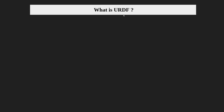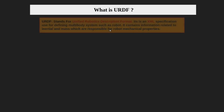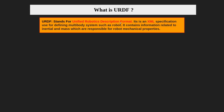So what is URDF? URDF stands for Unified Robot Description Format. Basically this is a format used for defining robots. It is in the form of XML and it is defined for multibody — a robot has so many bodies, that's why it's called multibodies. It has information like inertia, mass, collision, and other things that are responsible for defining the mechanical properties of a robot.